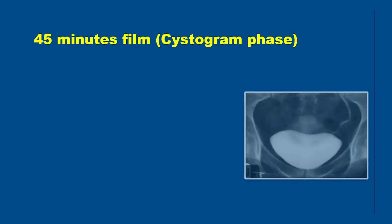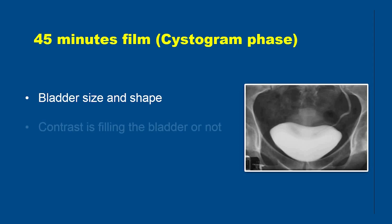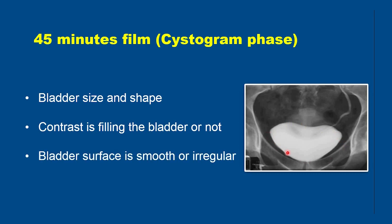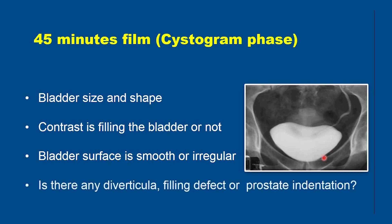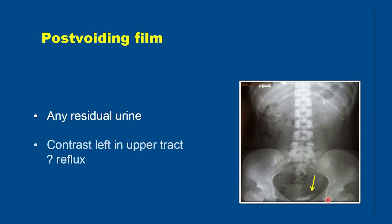The next film is taken when the patient complains of a full bladder, usually around 40 to 45 minutes after injection of contrast material. Look for bladder size and shape, whether the contrast is filling the bladder, whether the bladder surface is smooth or irregular, and also look for any diverticle, filling defect, or prostate indentation. Lastly, a post-voiding film is taken in which we look for any residual urine and whether any contrast is left in the upper urinary tract, which can be due to reflux or delayed excretion.